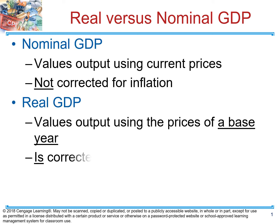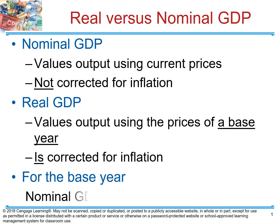We're going to continue learning about GDP. In this video we're going to talk about what is the difference between real and nominal GDP. We know that GDP represents the total income of everybody in the economy or total expenditure of everybody in the economy. Either you use an expenditure or an income approach, those numbers are supposed to be the same.